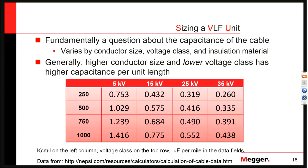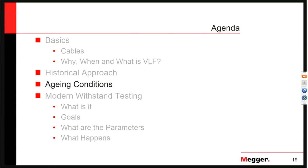Q&A: Is 0.1 Hz VLF equivalent to a DC HIPOT test? No — 0.1 Hz is very much an AC HIPOT, just very slow. We switch from a fully positive peak to a fully negative peak in 5 seconds. The electrons are being pushed into and out of the insulation material every 5 to 10 seconds — there is an oscillation just like an AC voltage source.